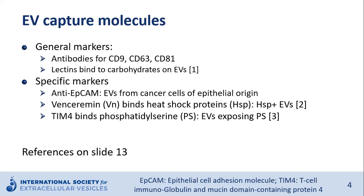When using specific markers, EVs derived from specific cell types can be isolated. An example is EPCAM-positive EVs that can be isolated from cancer cells of epithelial origin. There are also other capture molecules and affinity capture methods, such as venceramine, which binds to heat shock proteins (HSP), making it possible to isolate HSP-positive EVs. The reproducibility and recovery of this isolation is dependent on the sample type.